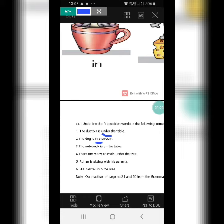The notebook is on the table, so the preposition is on. There are many animals under the tree.